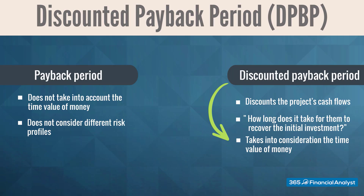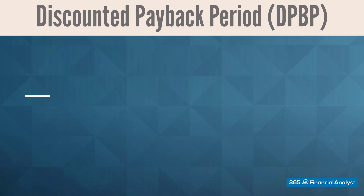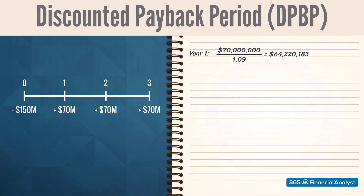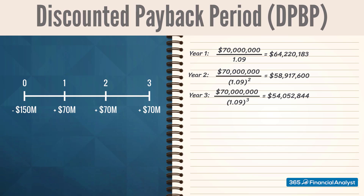Let's illustrate it by going back to the alpha example we saw earlier. To compute the project's discounted payback period, we first discount each of the cash flows at the estimated 9% rate. We obtain $64.22 million for year 1, $58.92 million for year 2, and $54.5 million for year 3.